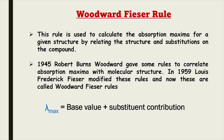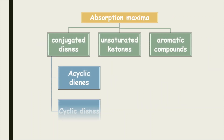To calculate the lambda max values of compounds, we need to add the base values with the substituent contribution. Woodward-Fieser rule can be used to calculate the absorption maxima of conjugated dienes, unsaturated ketones, and aromatic compounds. But for this video, we will discuss only about the conjugated dienes.